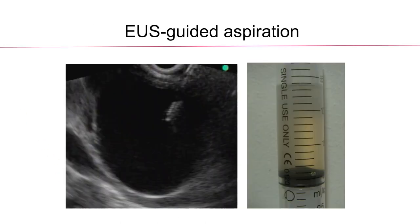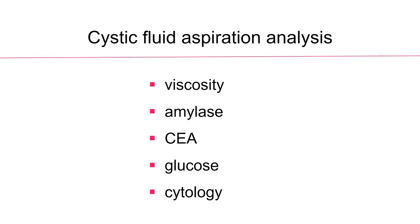So we are adding EUS-guided cystic fluid analysis. After cystic fluid aspiration, we can check the viscosity of the fluid, amylase, CA, glucose, and cytology. Among these markers, CA seems to be the best marker for the differential diagnosis of mucinous lesion from non-mucinous lesion.